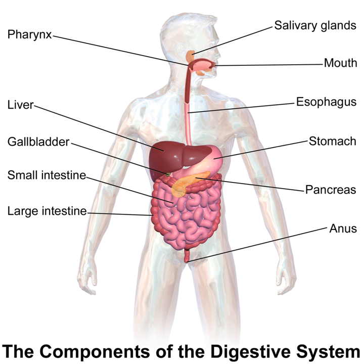Sucrase is an enzyme that breaks down the disaccharide sucrose, commonly known as table sugar, cane sugar, or beet sugar. Sucrose digestion yields the sugars fructose and glucose, which are readily absorbed by the small intestine.